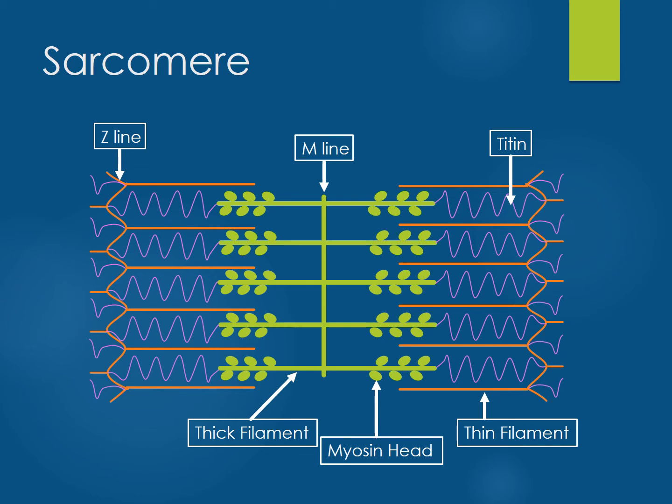The Z-line is the zigzag line that both thin filaments and titin attach to. The length of a single sarcomere unit is from one Z-line to the next. The M-line is located directly in the middle of the sarcomere, and thick filaments are attached to it.